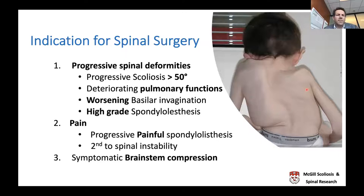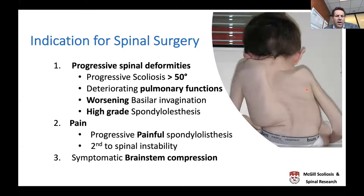Focusing on indications for spinal surgery in these children: the indications need to be sound because this type of surgery is fraught with complications. Typically, indications include progressive spinal deformities—if you have a scoliosis that is progressive and greater than 50 degrees, the deformity will continue to worsen and pulmonary function will continue to drop, so surgical intervention is probably warranted.